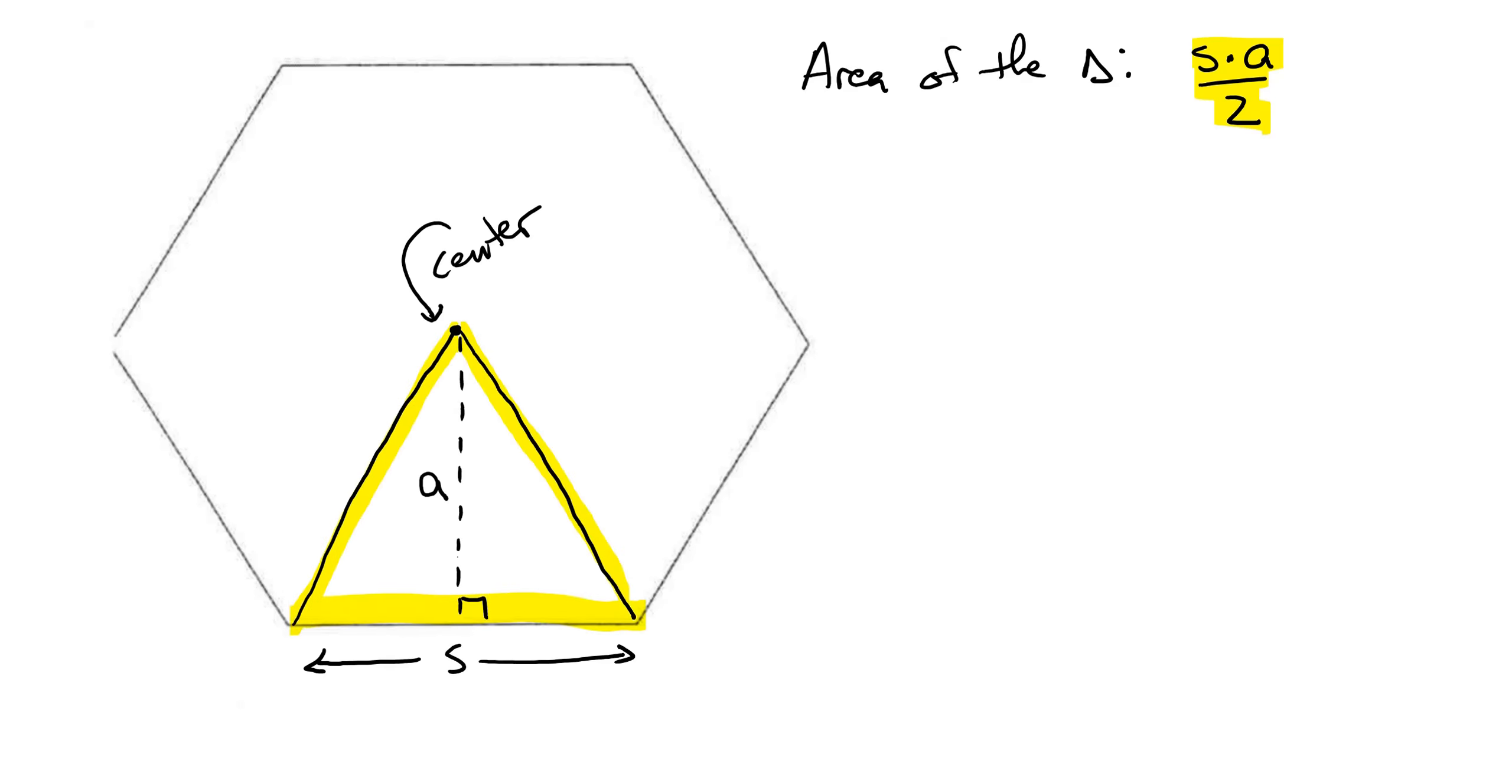And if I was going to go ahead and draw in the rest of the radii, in this particular figure, I would have six of these triangles. So if I multiplied the area of this triangle by six, I would get the area of the whole polygon.